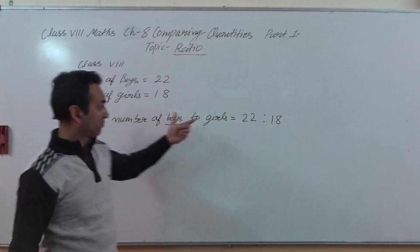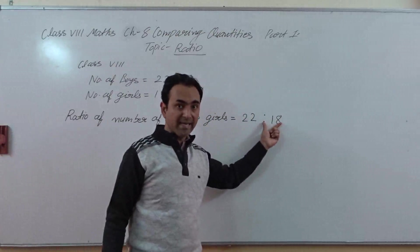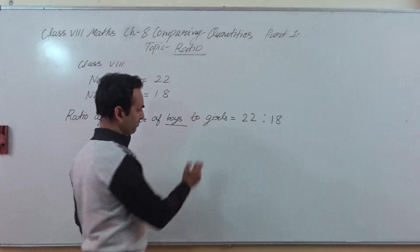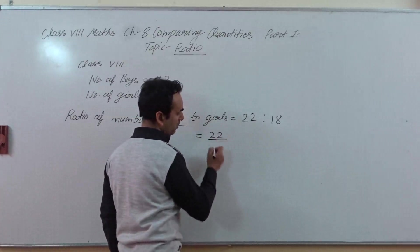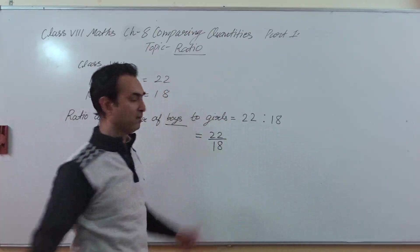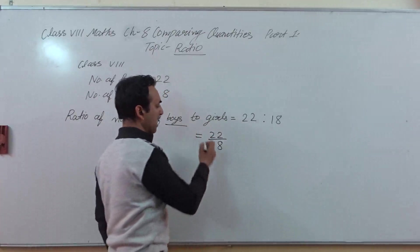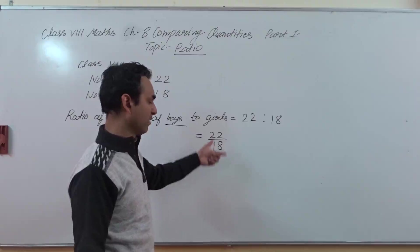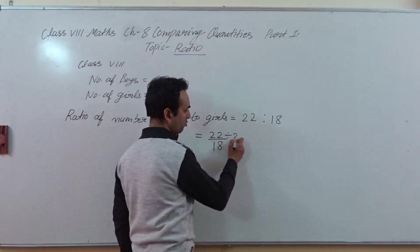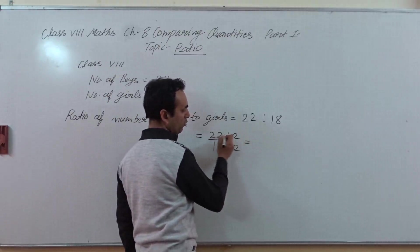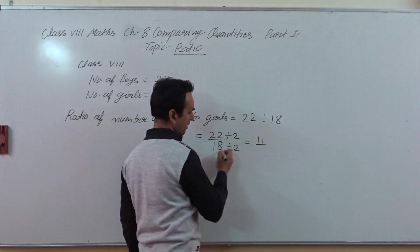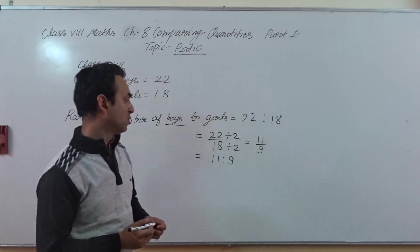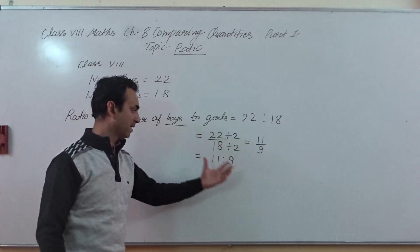If the number of girls is 18 and the number of boys is 22, let's simplify. We write 22 upon 18, which is 22 ratio 18. For simplification of the fraction, we divide by the common factor, which is 2. So 22 divided by 2 is 11, and 18 divided by 2 is 9, giving us 11 ratio 9. This is the simplest form and simplest ratio.